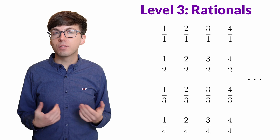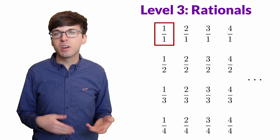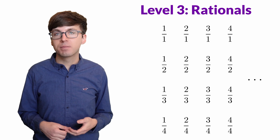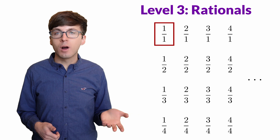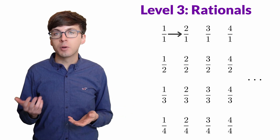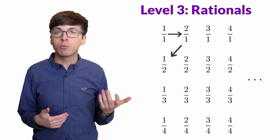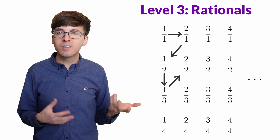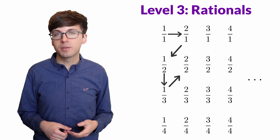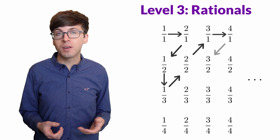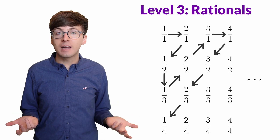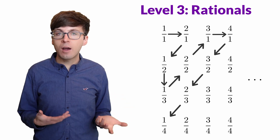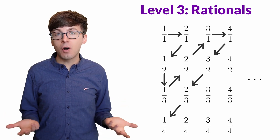It's worth pointing out that values are frequently repeated — the number 1 is 1 over 1, but also 2 over 2, 3 over 3, and so on. Now let's assign rooms: 1 over 1 gets room one, 2 over 1 gets room two, then we move diagonally to assign 1 half to room three, and keep zigzagging. When we reach a repeated value like 2 over 2, we skip it. Every positive fraction will be assigned a room, showing the positive fractions have the same cardinality as the natural numbers. We often call this size of infinity countable — we were able to count the positive fractions one by one and get a complete ordered list.